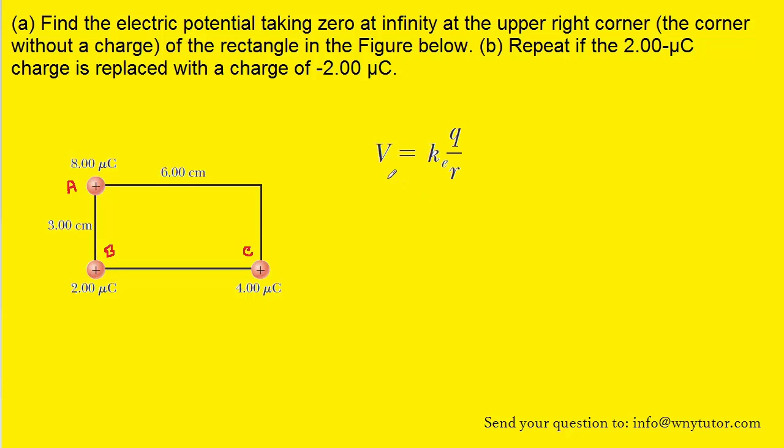We will next recall that there is an equation that gives us the potential produced by point charges. Notice all of these charges are point charges. And we can see that the potential produced by a point charge is equal to the Coulomb constant multiplied by the charge of the particle divided by a distance.